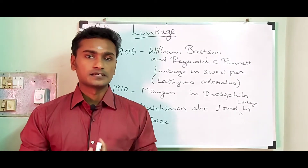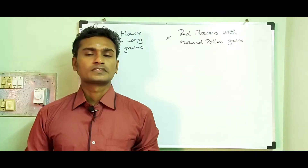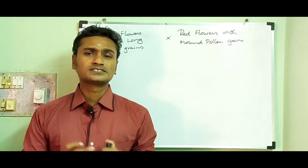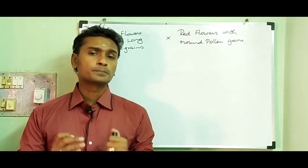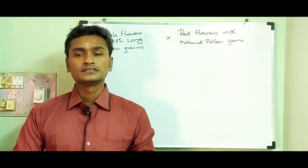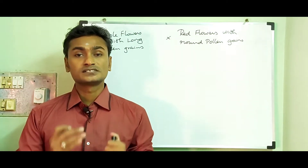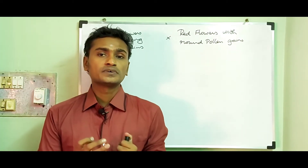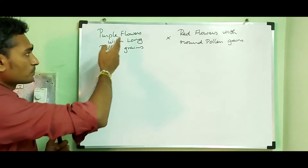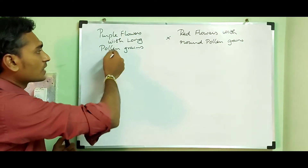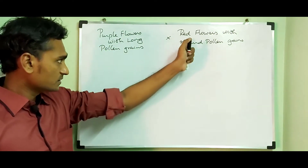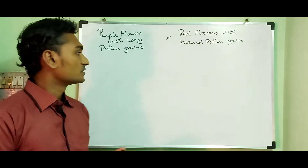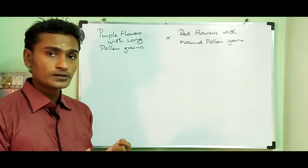Bateson and Punnett made a cross between a homozygous strain of sweet pea having purple flower with long pollen grain and another homozygous strain of red flower with round pollen grain.